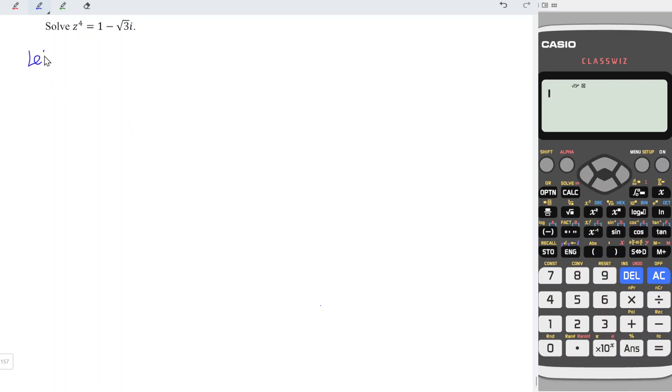Firstly, I'm going to let z to the power of 4 be equal to w, where w is equal to 1 minus square root of 3i.